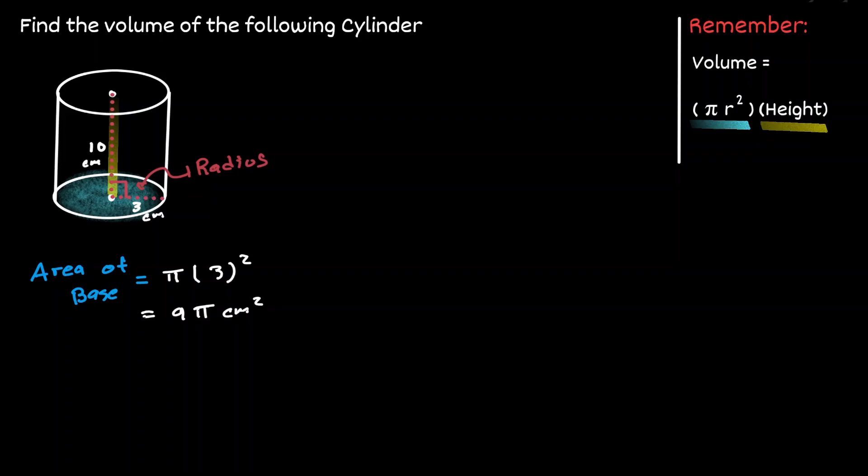So now that we know what is the height of the cylinder and what is the area of the base, now we can plug that information in our formula and find the volume of the cylinder. Then we'll have 9 pi times 10, which is equivalent to 90 pi, and because we're talking about volume, then it's centimeters cubed.